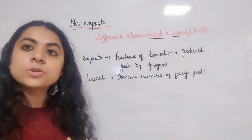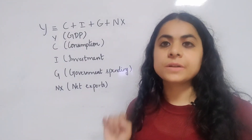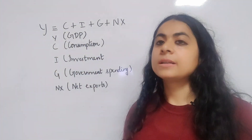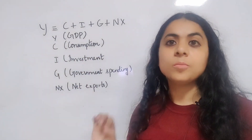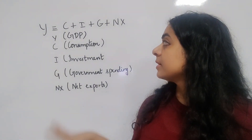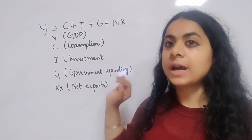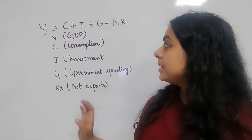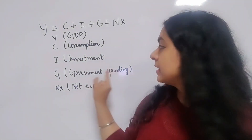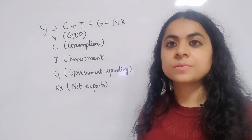The last component is net exports — that is, the difference between exports and imports of goods and services. We can write the relation between GDP and its various components in the form of an equation. This equation is an identity which shows that GDP is the sum of consumption, investment, government spending, and net exports.